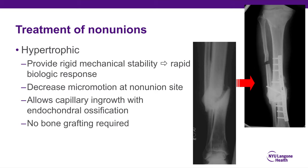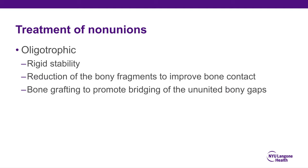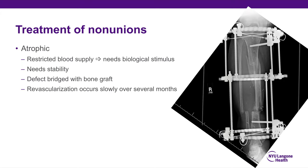With a hypertrophic non-union, you have good biology but poor stability, so you need to provide rigid mechanical stability and you'll get a rapid biological response. Decreasing micromotion at the non-union site allows capillary ingrowth with endochondral ossification, and you really don't need bone grafting because you have good biology. In an oligotrophic non-union, you need rigid stability and need to reduce bony fragments to improve bone contact. Bone grafting is helpful because you'll usually have bony gaps that need bridging. With an atrophic non-union, you have bad biology and bad stability, so you need a biological stimulus, stability, bone graft, and revascularization will occur slowly over several months.